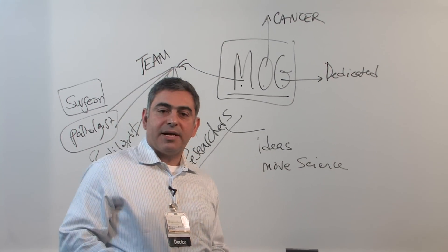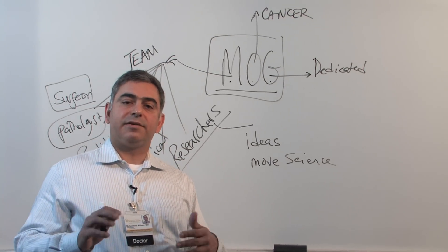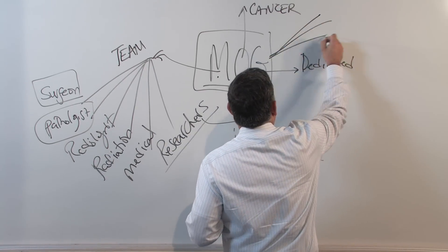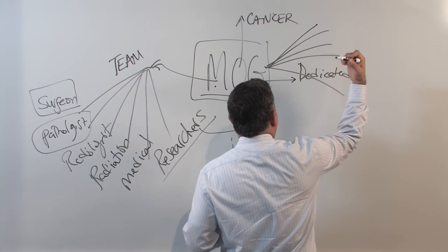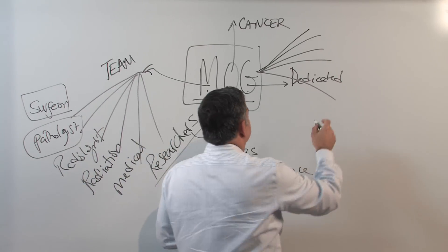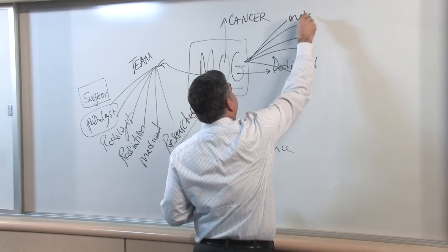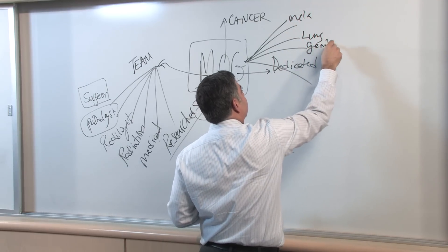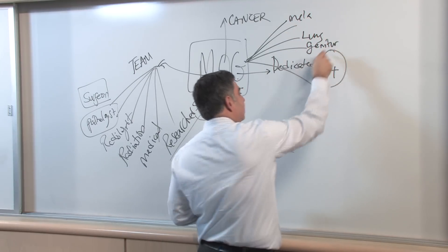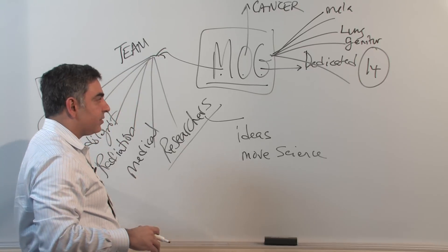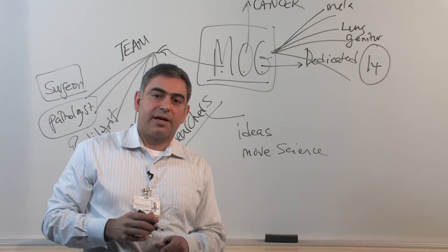At the Holden Comprehensive Cancer Center, we have 14 different groups. What's interesting is each one of these groups focuses on a specific cancer. I belong to the melanoma and sarcoma group, but there are other groups, like the lung group and the genitourinary group. We have 14 distinct groups allowing these team players to get together and discuss cancer.